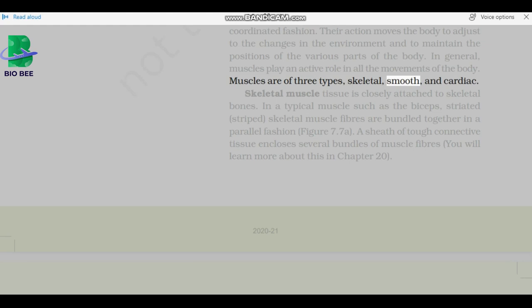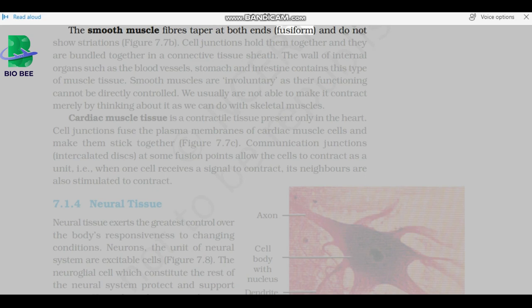Skeletal muscle tissue is closely attached to skeletal bones. In a typical muscle such as the biceps, striated, or striped, skeletal muscle fibers are bundled together in a parallel fashion. A sheath of tough connective tissue encloses several bundles of muscle fiber. Muscle fibers taper at both ends, fusiform, and do not show striations.